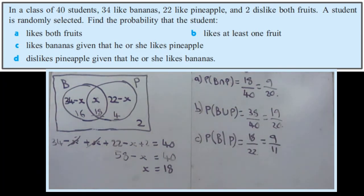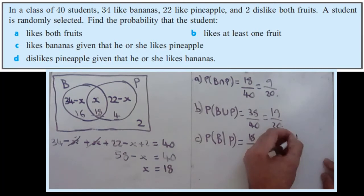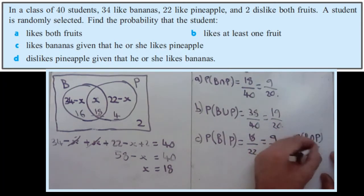Now, you could have done that using conditional probability formulas as well. So remember, P(A given B) equals the probability of both of them happening, A and B, over the probability of the given one. So what I mean by that, you could have said, well, it's a probability of them liking bananas and pineapples over the probability of the given one.